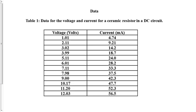The next section of a lab report is data, and there are two types: a table and a graph. When you label a table, make sure the label appears on top of the table — for example, 'Table 1: Voltage and Current in a Ceramic Resistor.' Notice how the data is tabulated and each column header includes the name of the data and its units, such as voltage in volts and current in milliamps, followed by the measured values.